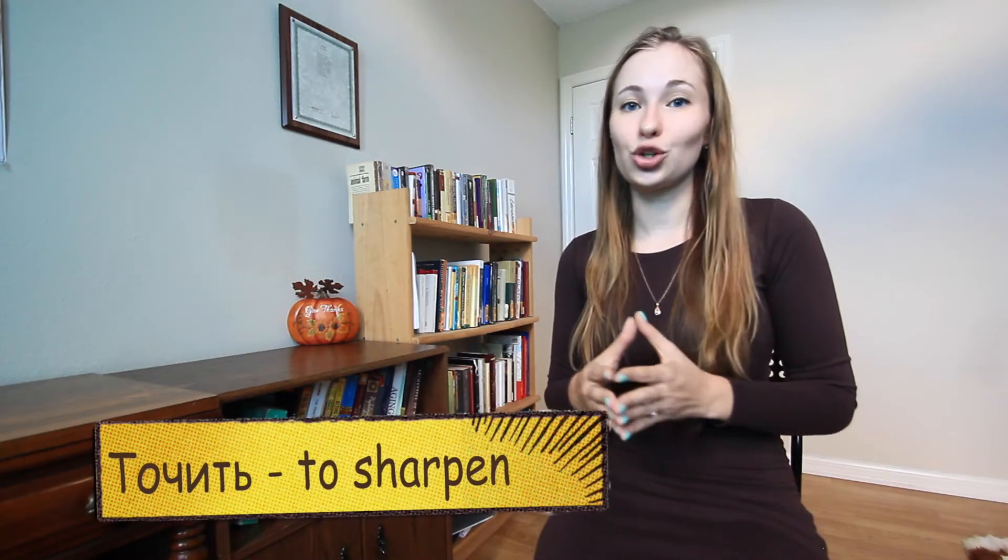Let's look at the literal translations of each word. Точить is to sharpen, and зуб is a tooth. So, literally, to sharpen someone's tooth.